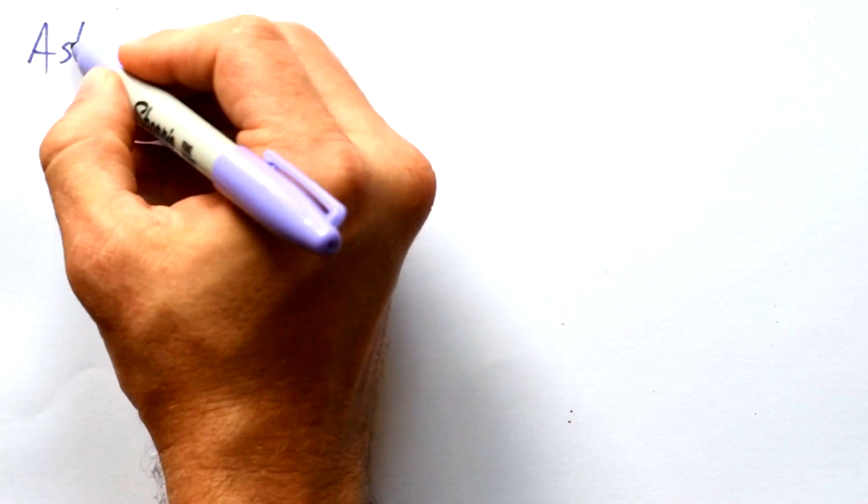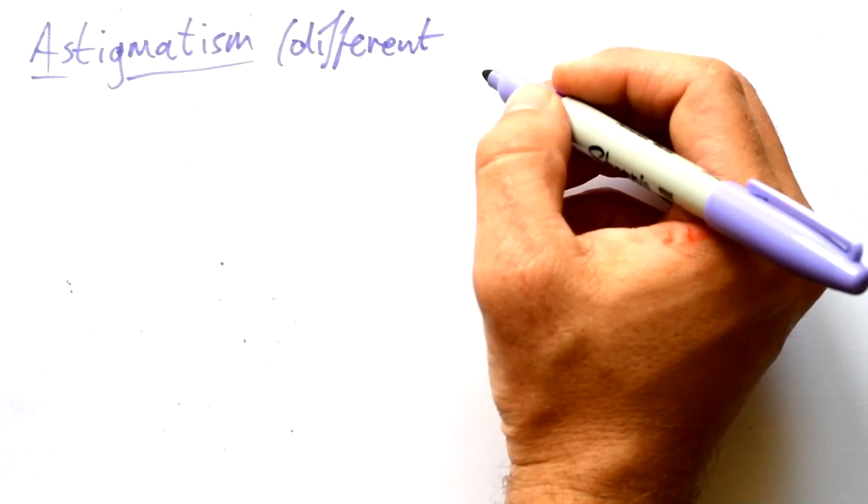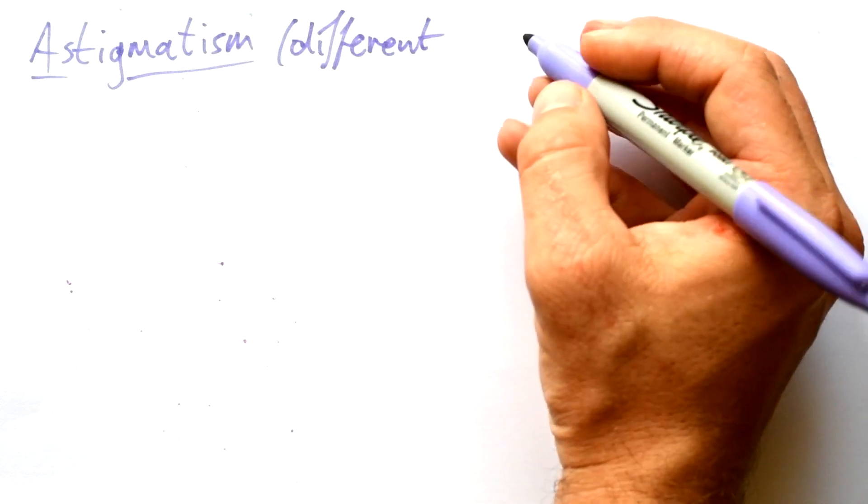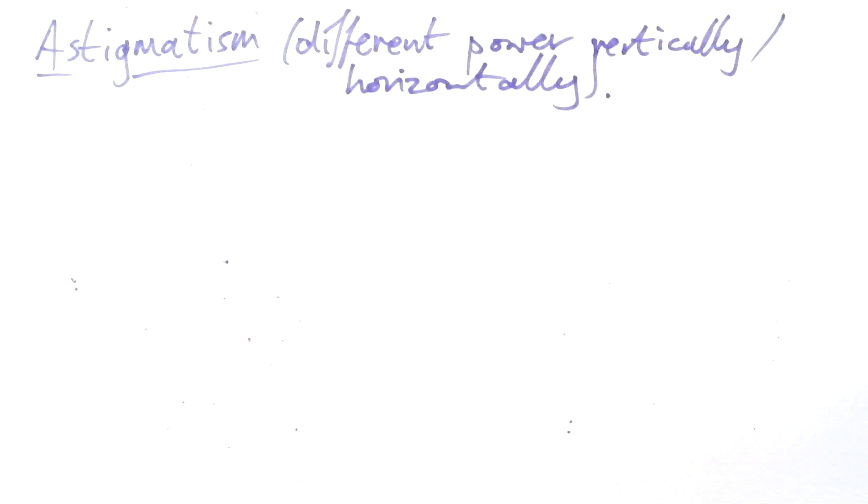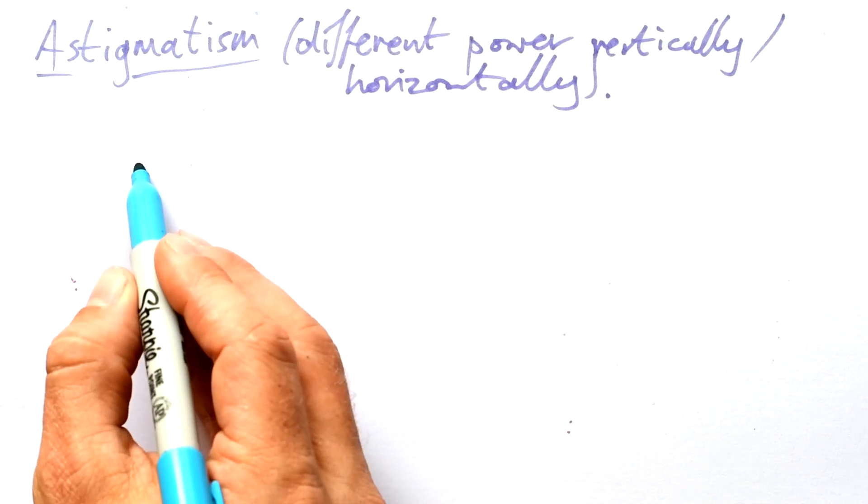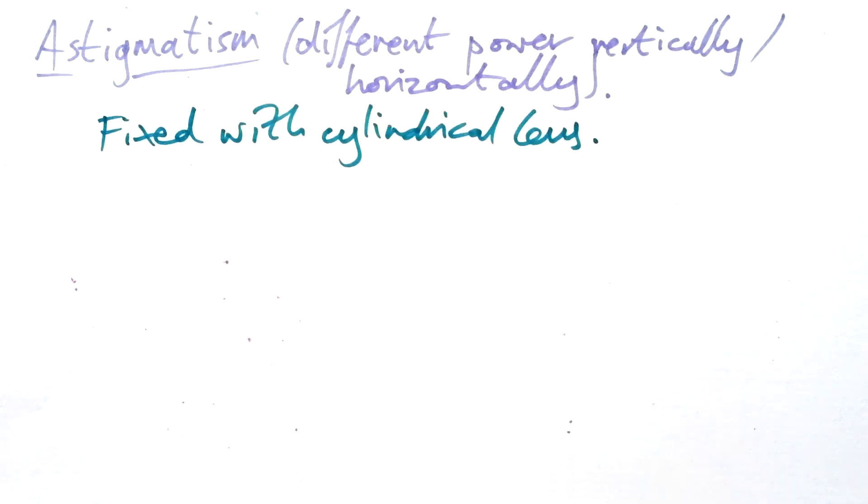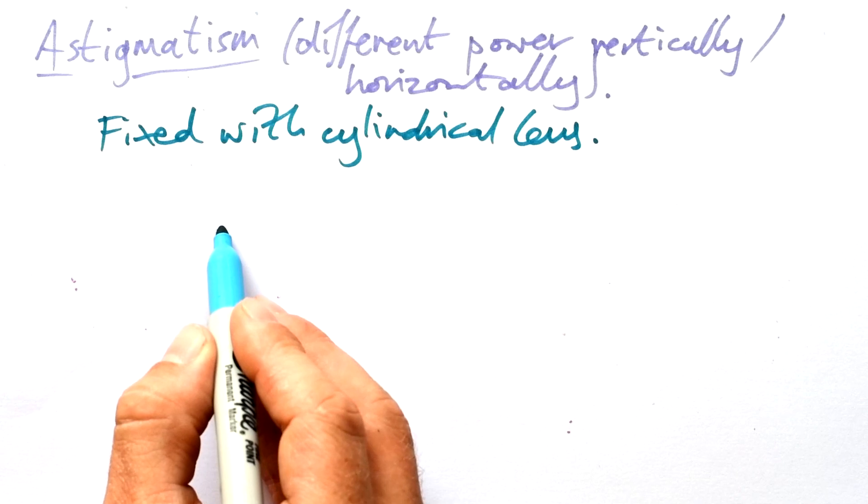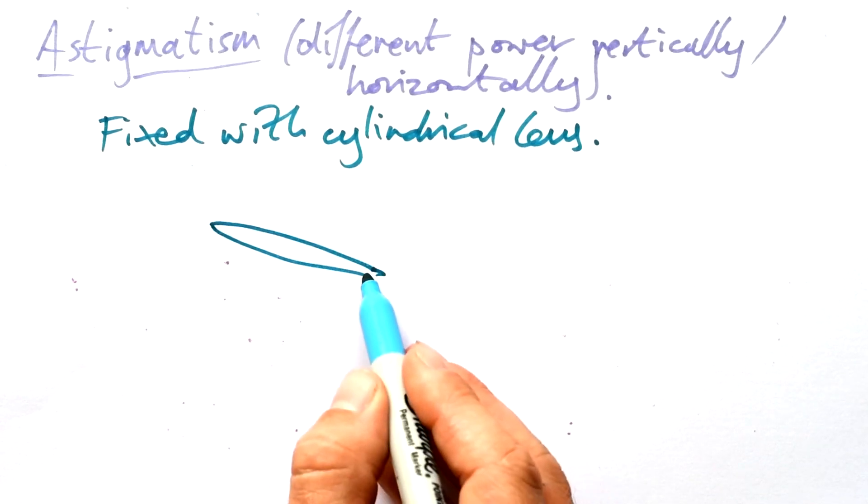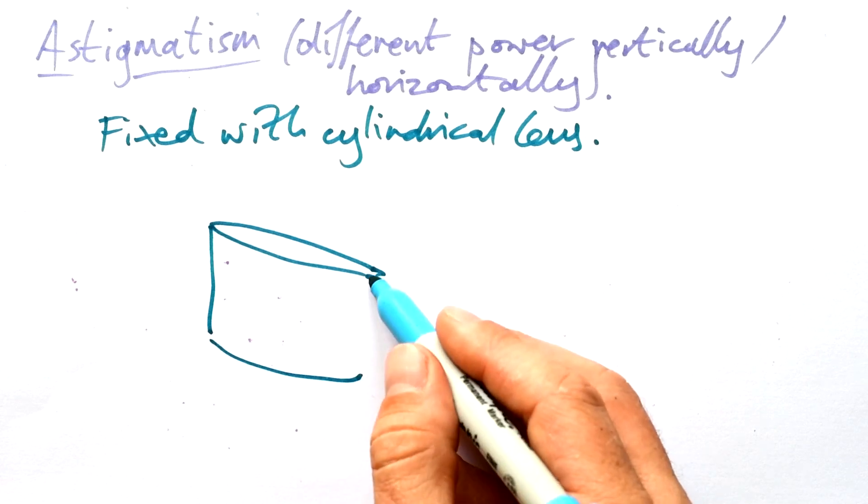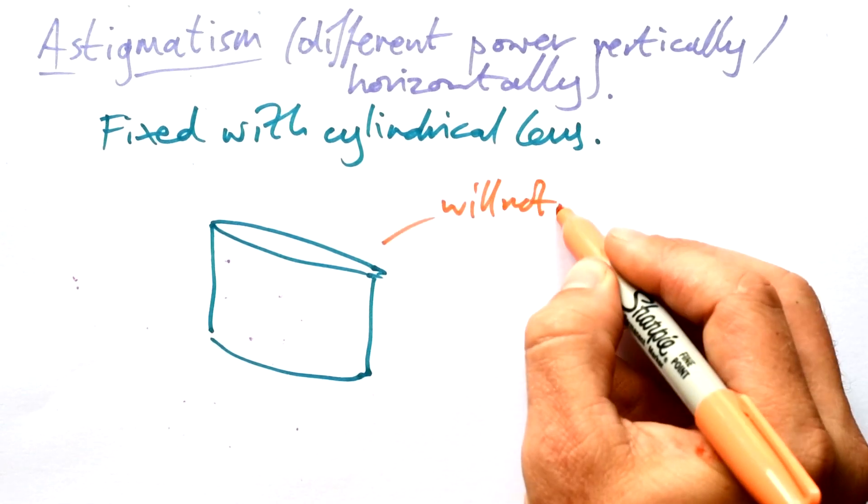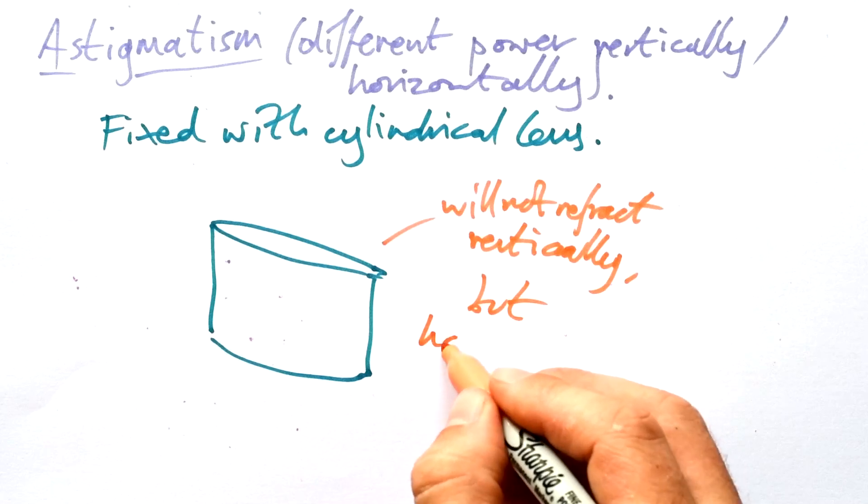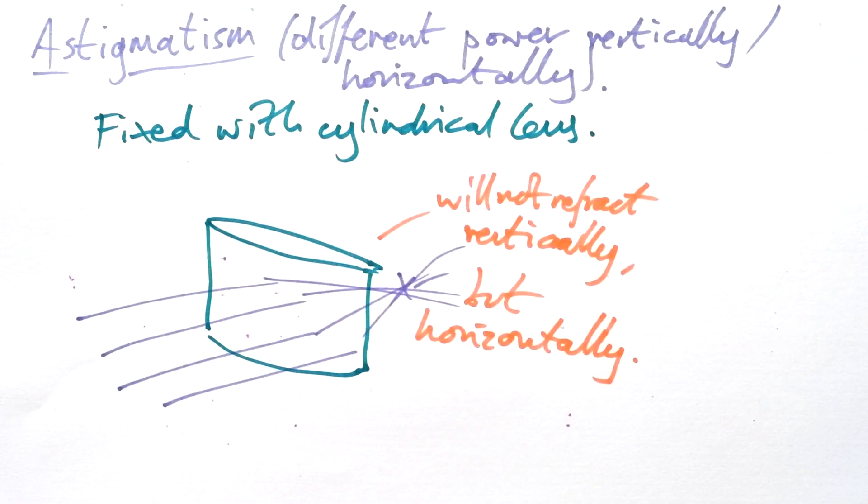Now one last little thing on this, astigmatism. It's what happens when your eye works maybe better vertically than horizontally or vice versa. So if you have short-sightedness or long-sightedness, then you'll usually have a lens that is just circular. It's the same no matter which way you turn it round. However, if you have an astigmatism, then you need to have a cylindrical lens. Let's say that your vision vertically is fine, but horizontally, it's not great. That means that in your glasses, you want a lens that sort of looks like this. This lens will not refract light vertically, but only horizontally. If it's the other way around, you just need to spin the lens 90 degrees.